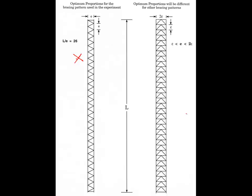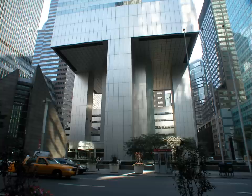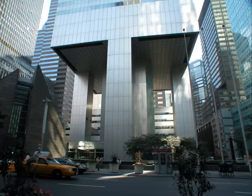If we change the bracing pattern, the optimal proportions change accordingly. We can actually see truss columns even at the bottom of very tall buildings, though this is rare because the loads are so great and the brace points on columns tend to be close enough together that we would just use massive thick columns at the base.